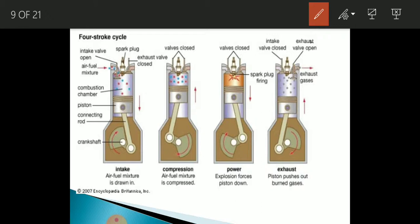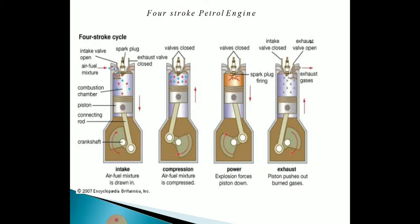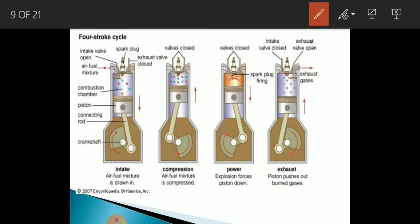Now let's study the working of the four-stroke engine. It is called four-stroke because four strokes take place to complete one complete cycle of the engine. These strokes are: suction stroke, compression stroke, power stroke, and exhaust stroke. In the first stroke — suction stroke — the piston moves from TDC to BDC. Due to this movement, a vacuum is created inside the cylinder, the inlet valve opens, and a charge (mixture of air and fuel) is introduced into the cylinder. In the first stroke, the inlet valve is open and the exhaust valve is closed.